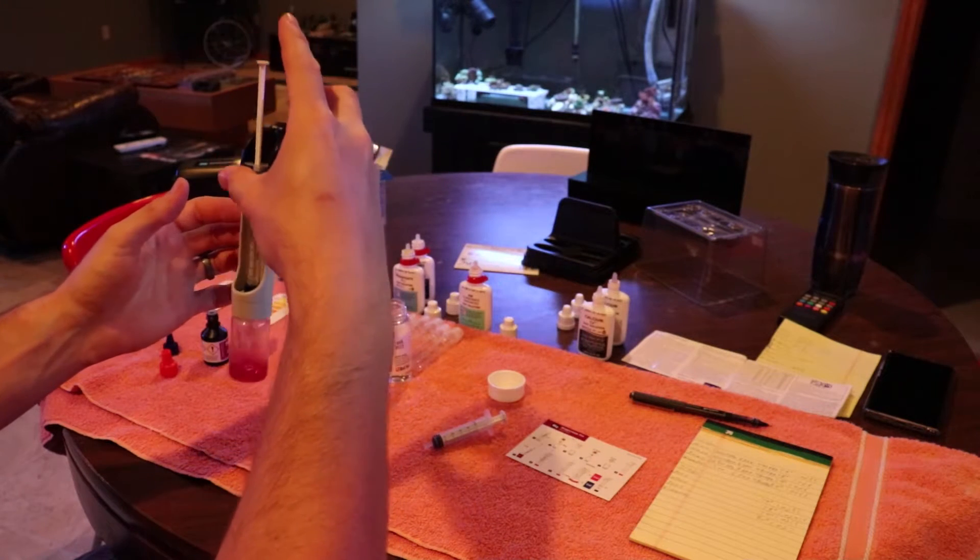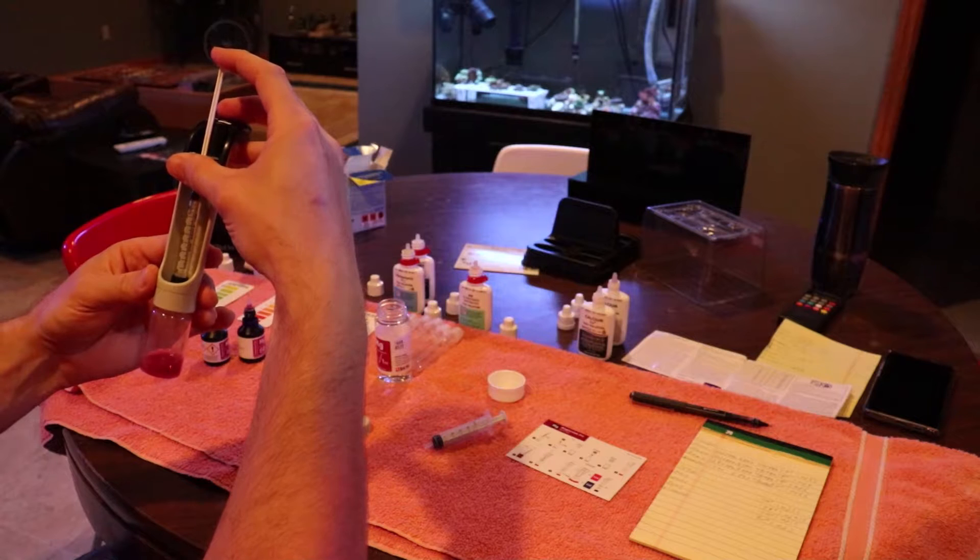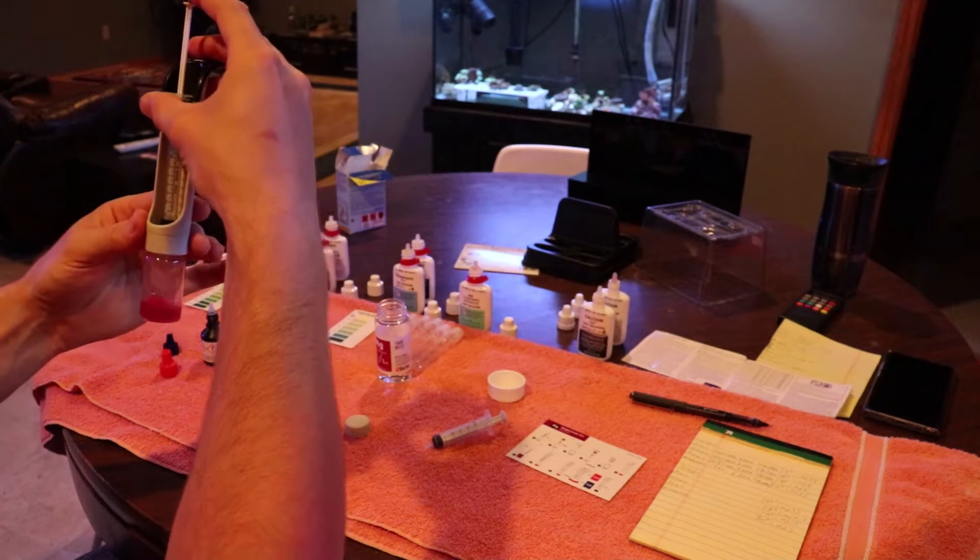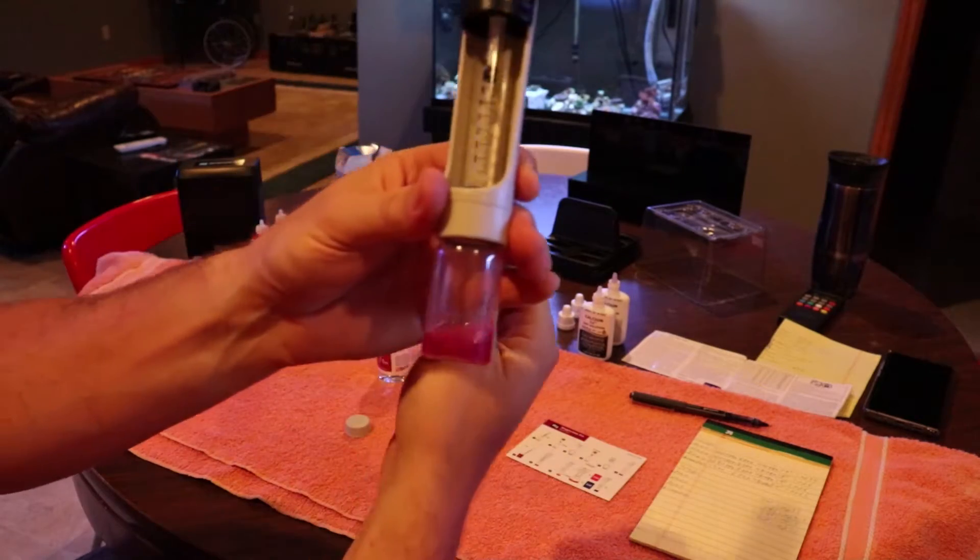It's important that the one milliliter syringe is pretty sensitive, so you want to add one drop at a time. Give it a little shake and add another drop. You can see the liquid in the jar right now is a pink color. The test is over when that solution turns to a dark purple color.